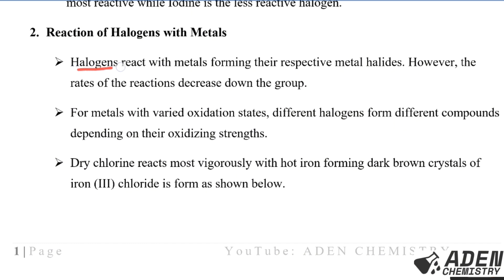The second chemical property is the reaction of halogens with metals. Halogens react with metals forming their respective metal halides; however, the rate of reaction decreases down the group. For metals with variable oxidation states, different halogens form different compounds depending on their oxidizing strength — fluorine has the strongest oxidizing strength, followed by chlorine, then bromine, and iodine has the lowest.